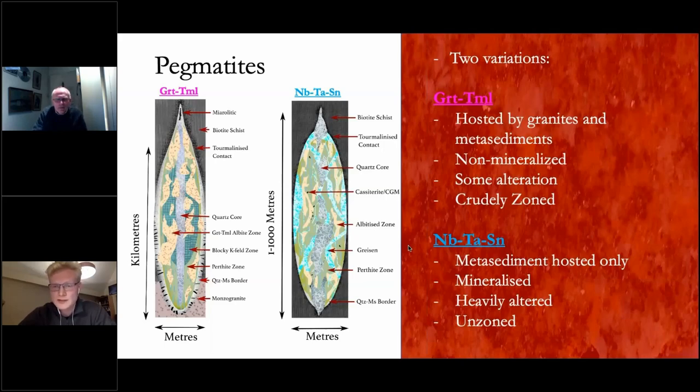The other type of pegmatite is the niobium tantalum tin pegmatite, which is the same type that you see at the Uis tin mine. These are metasediment hosted only, mineralised with respect to cassiterite, so tin, and columbite group minerals like coltan. They're heavily altered by means of greisenisation, so the feldspars have been replaced by mica and quartz in some places, and they're characteristically unzoned.